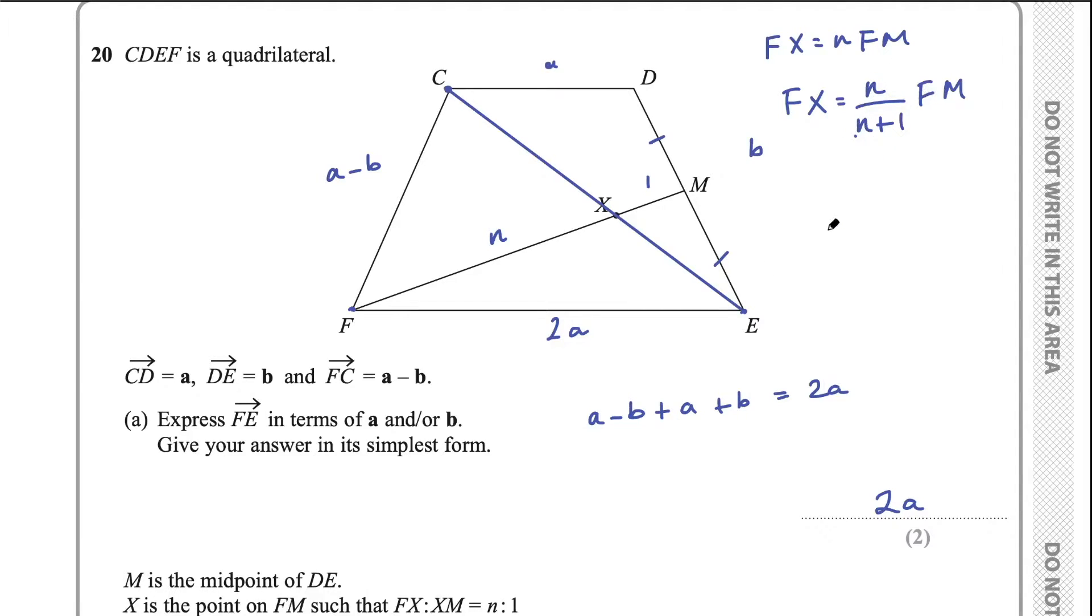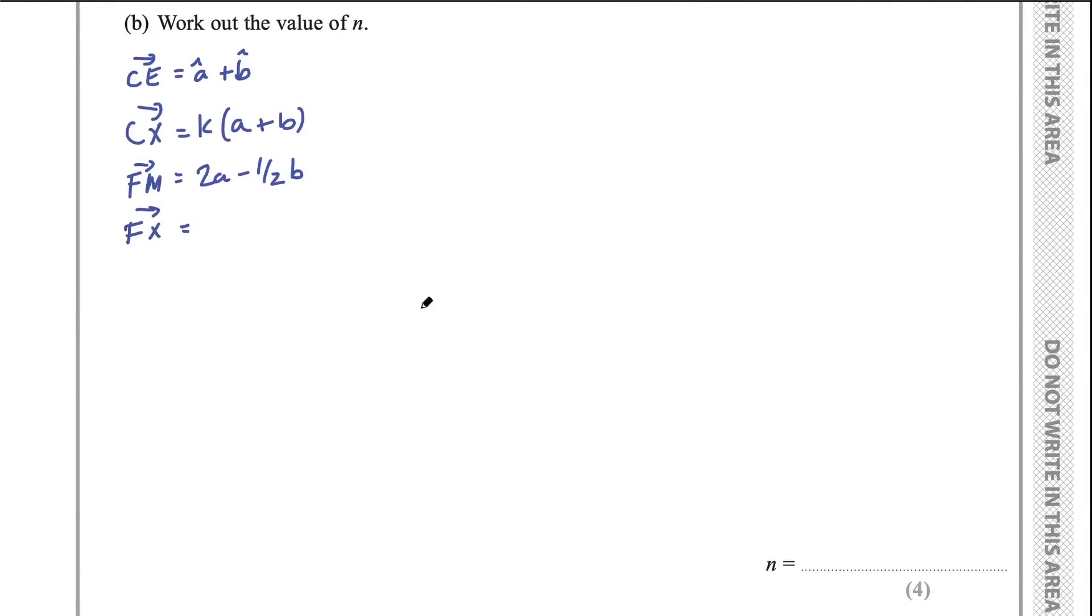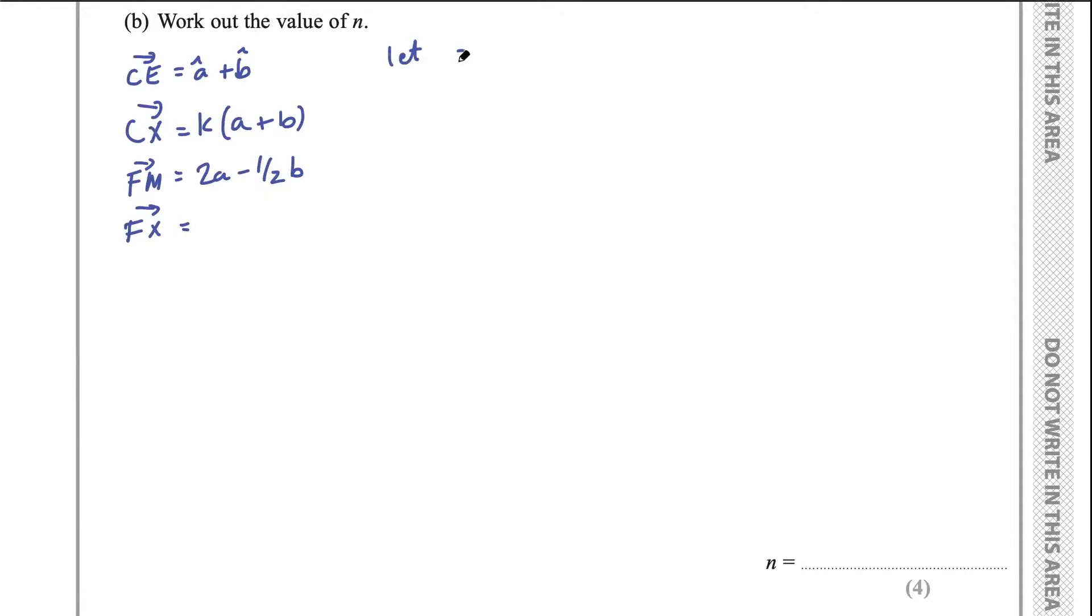Now, that's going to end up being messy. So what you're going to want to do here is to let some variable, let X equal this, n over n plus 1. And that's actually going to make your solution a lot simpler. So let some variable equal this fraction of this line and it's going to work out much easier for you. So that's what I'm going to write down here. So let X equal n over n plus 1. Then FX is that fraction of FM.